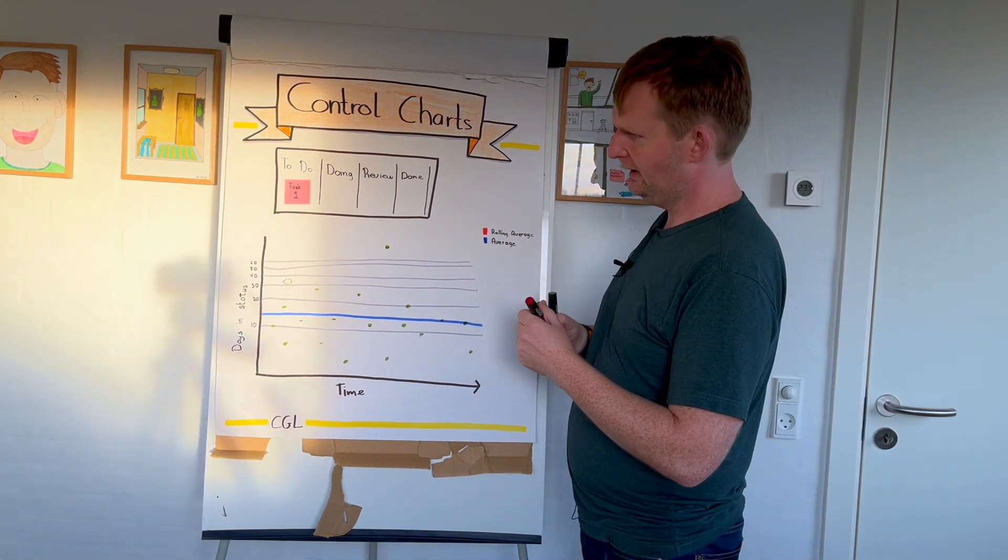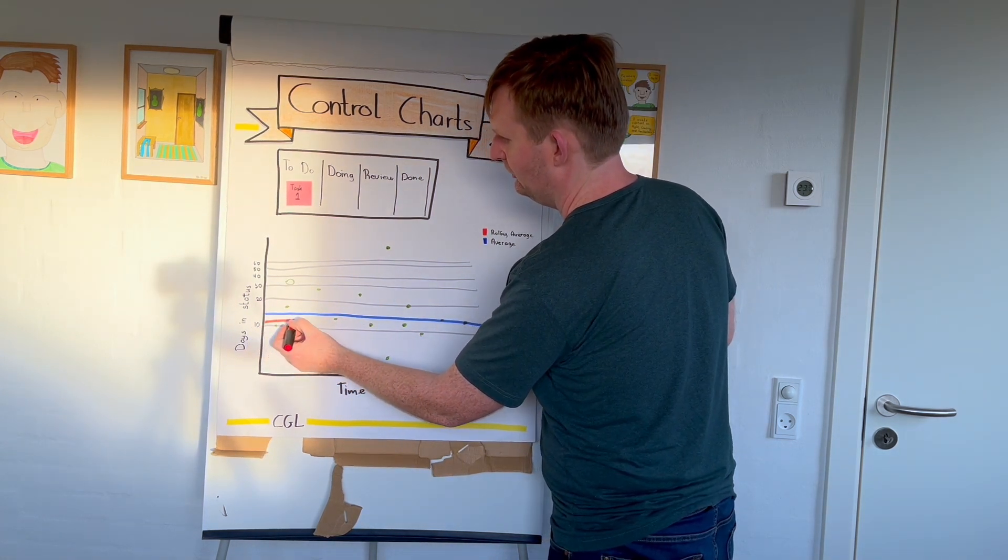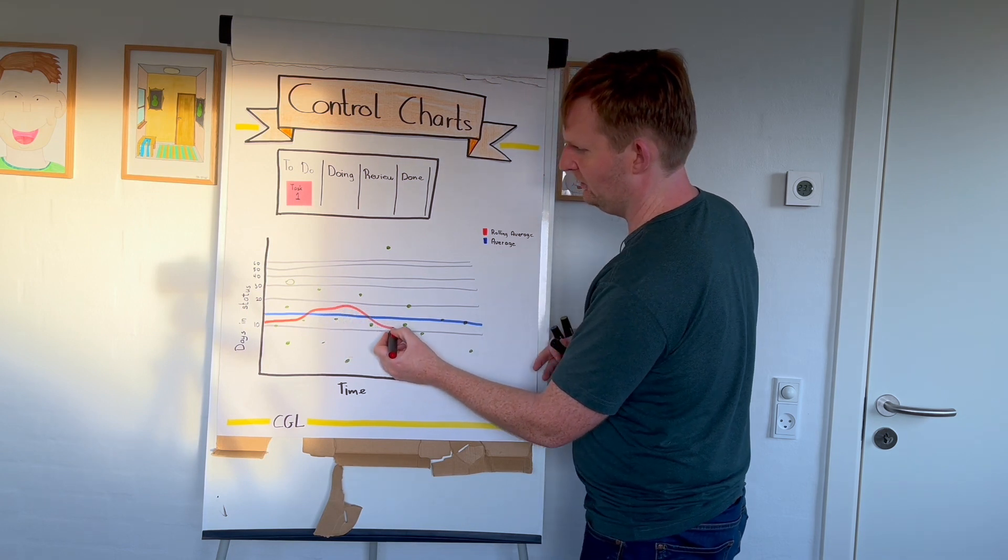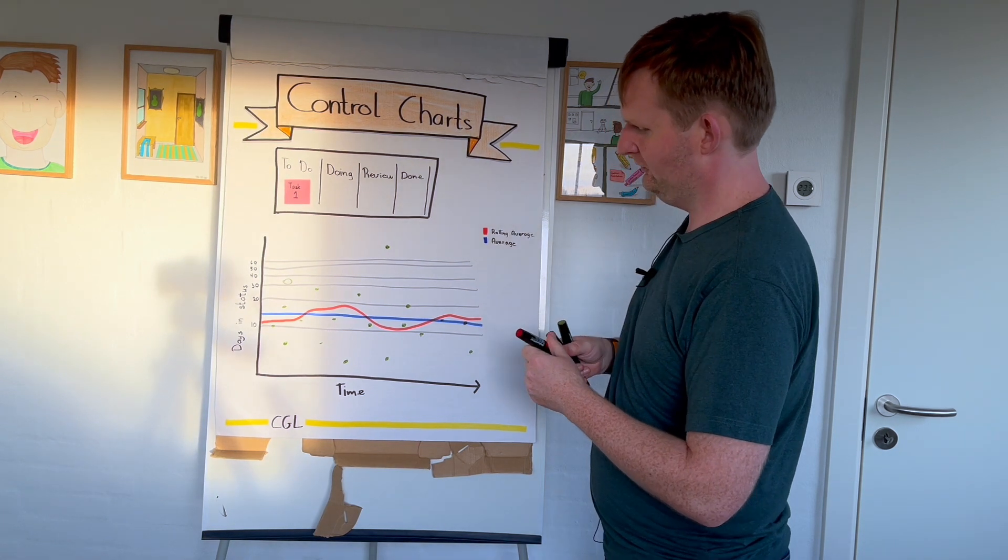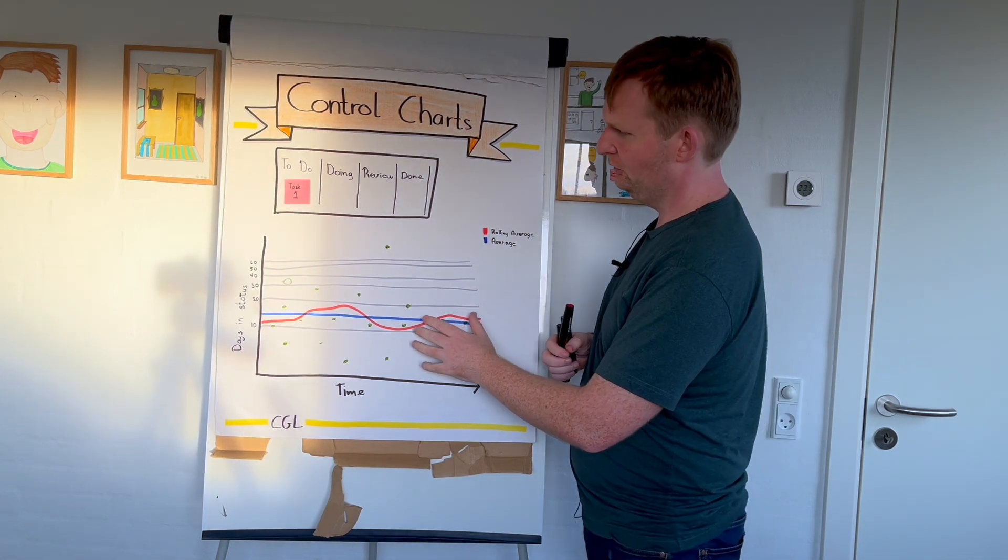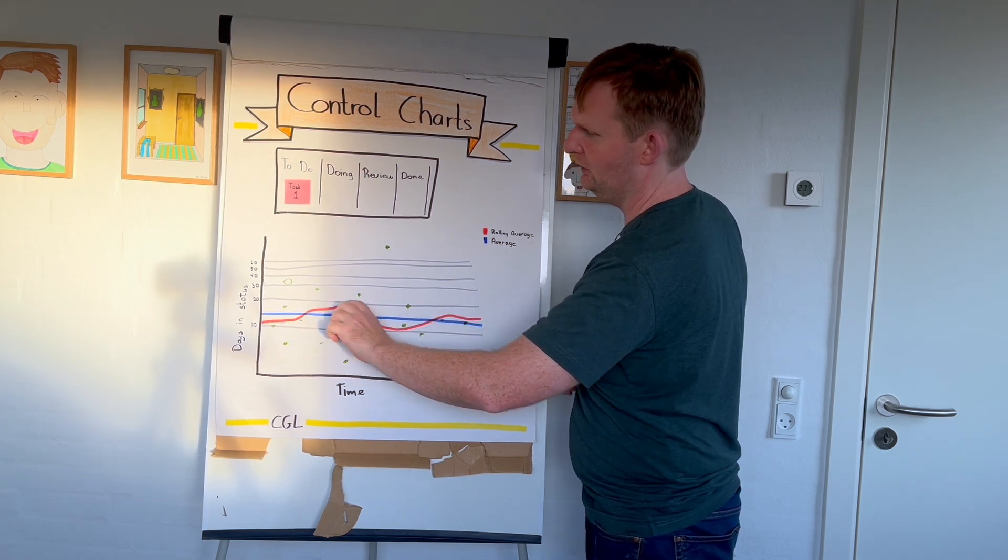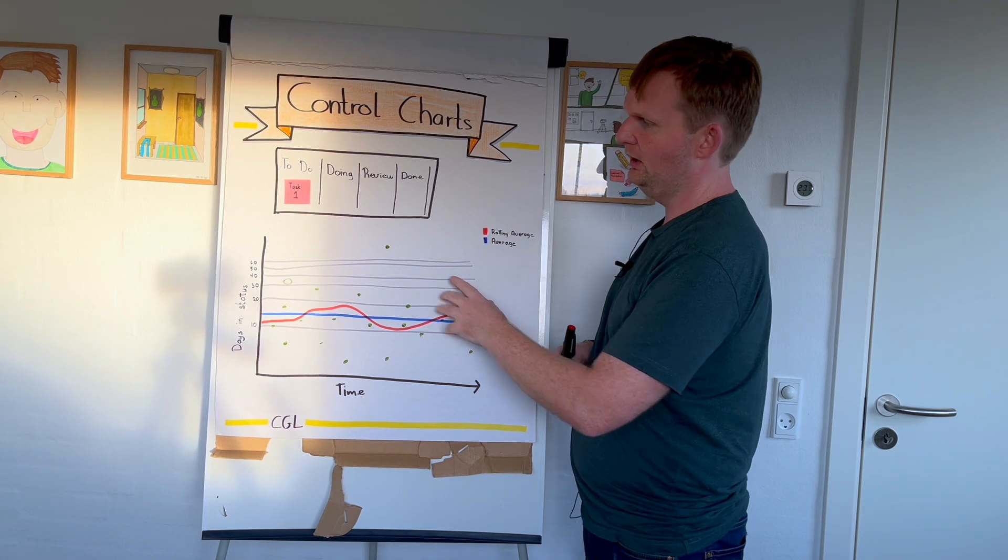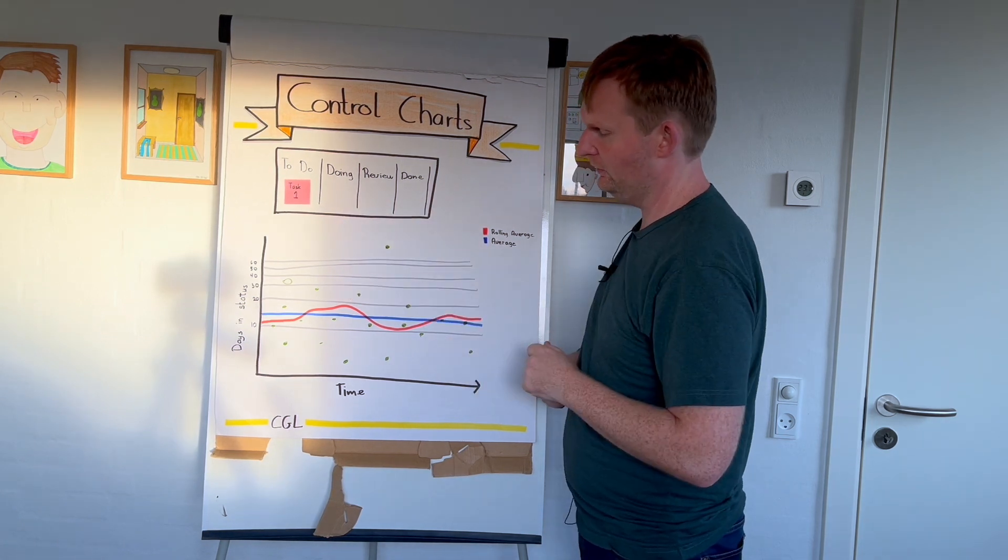We can also start to see how are we doing with the rolling average. So the rolling average will move a bit but of course be somewhat centered around the overall average. But that's simply to tell us at any given point, and we can also sometimes see trends if the rolling average is going up, which means we're getting slower—we're spending more time in these statuses—and of course the opposite.